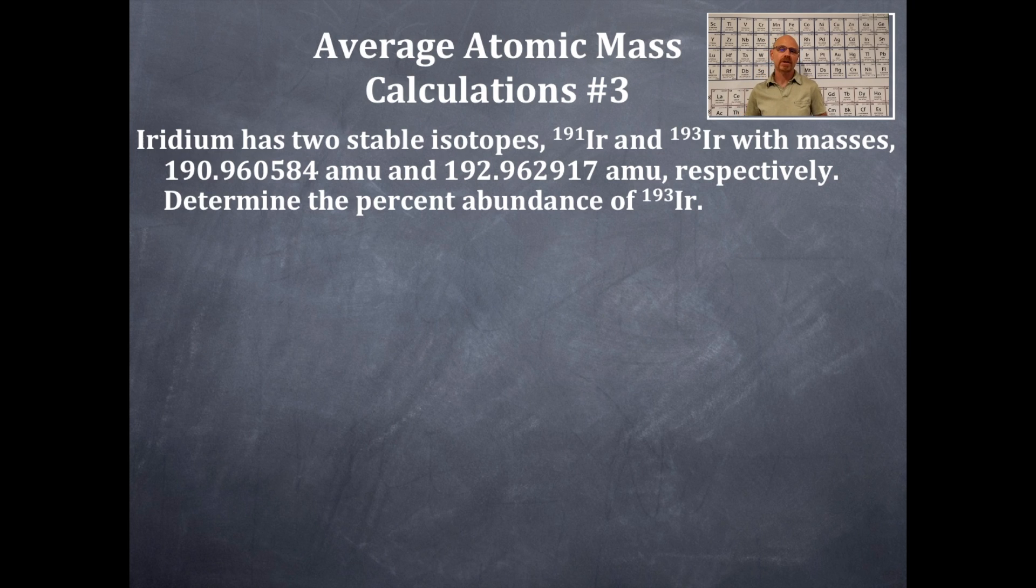Iridium has two stable isotopes, Iridium-191 and Iridium-193, with masses of 190.960548 atomic mass units and 192.962917 atomic mass units, respectively. That respectively means that they are in the same order. We're going to determine the percent abundance of Iridium-193, that is the second isotope, the most massive of the isotopes of the two.